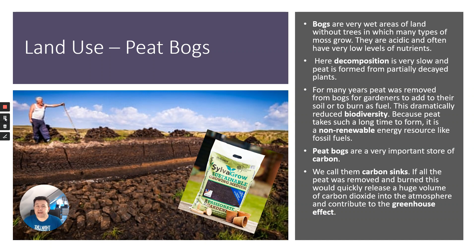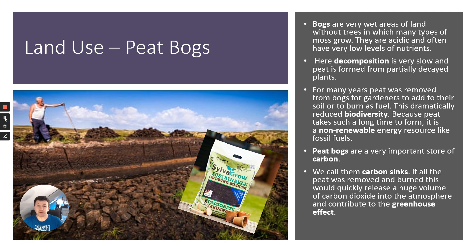Peat bogs are very wet areas of land without trees. They're very acidic and have very low levels of nutrients. The carbon from dead plants has not decomposed quickly, so over many thousands of years they form peat — partially decayed plant matter. Peat was historically used as a fuel and by gardeners for compost, but this dramatically reduces biodiversity. Because peat takes many thousands, if not tens of thousands, of years to form, it is a non-renewable resource, like fossil fuels.